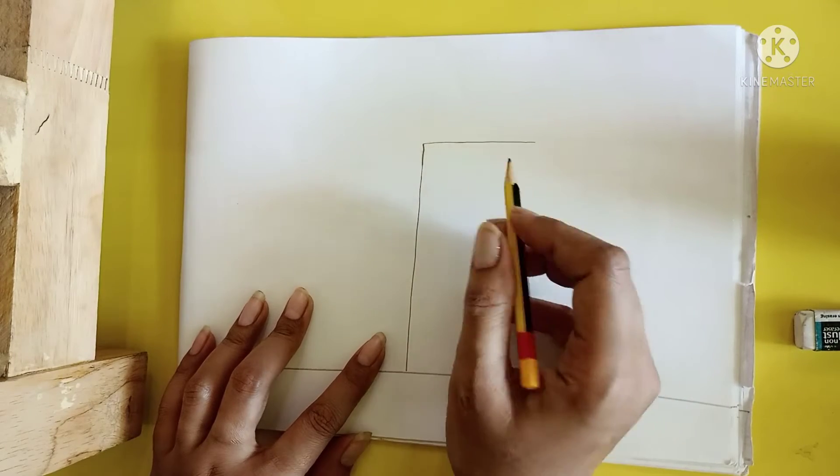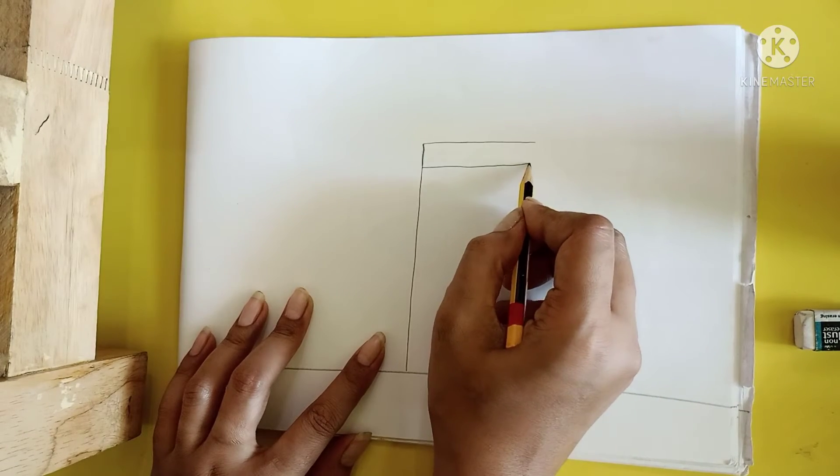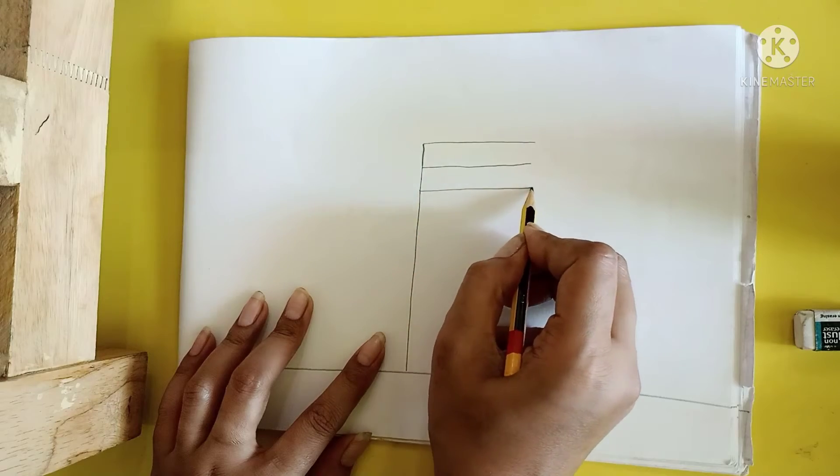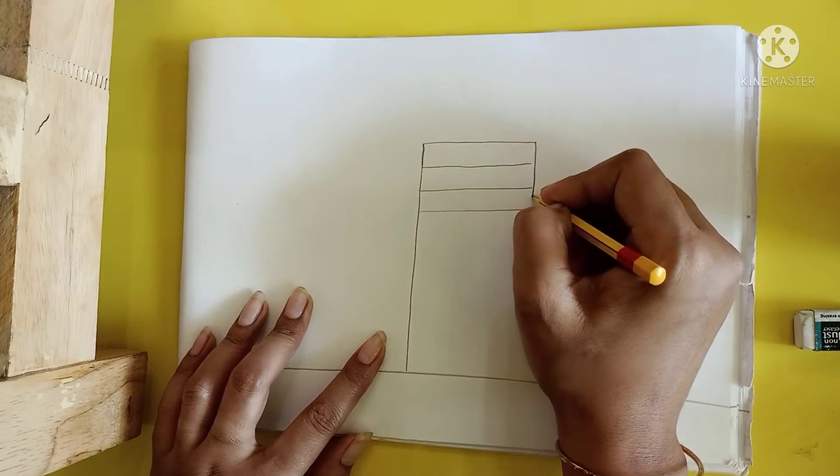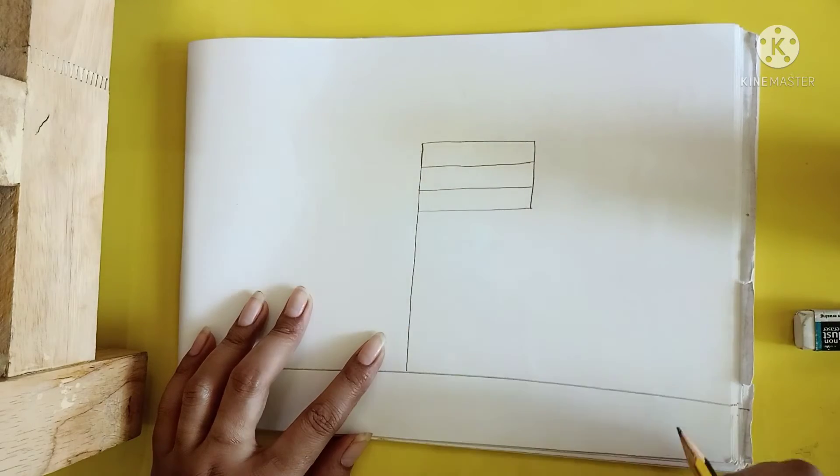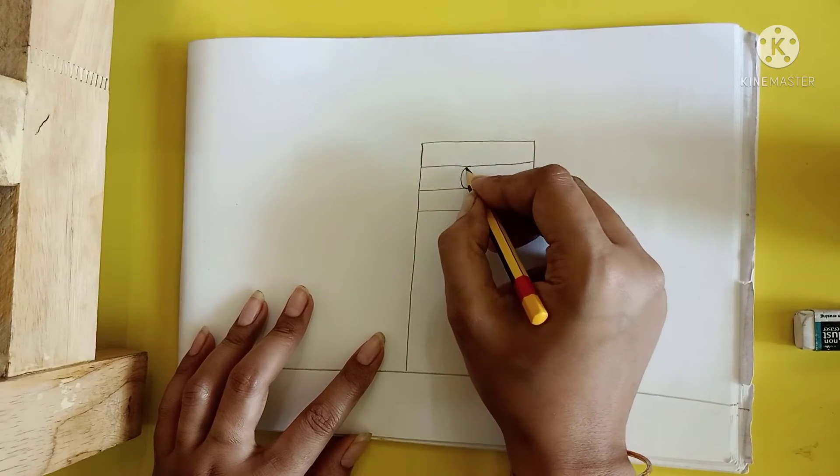Now make four sleeping lines like this. Now join the sleeping lines with standing line like this.